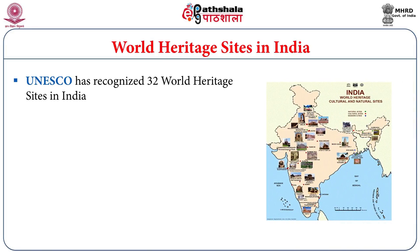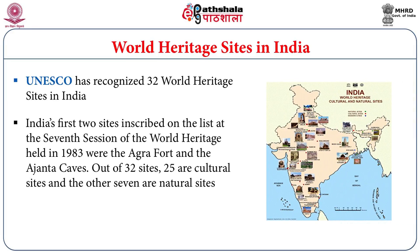UNESCO is a major player in recognition and continuation of the process, and in India we have the Archaeological Survey of India which, in association with UNESCO, maintains the cultural world heritage sites especially archaeological sites. When it comes to nature, the Department of Environment, Forest and Climate Change maintains natural sites. In India, we have recognized 32 world heritage sites. India's first world heritage sites were recognized in the year 1983 — the Agra Fort and the Ajanta Caves in Uttar Pradesh and Maharashtra. Out of 32 sites, 25 are of cultural significance and 7 are of natural significance.